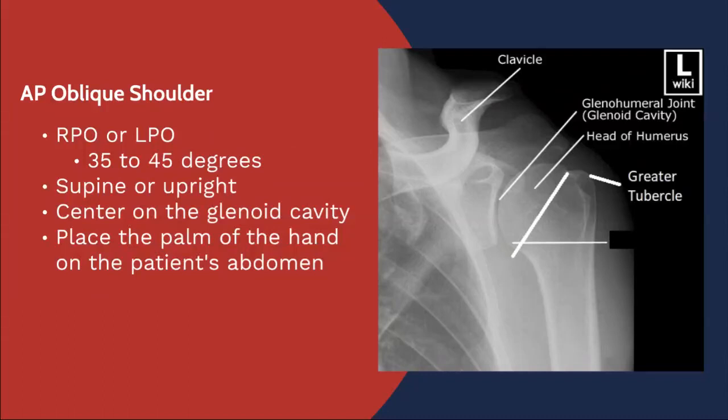As always, we want to be centered on the anatomy of interest, which in this case is the glenoid cavity of the scapula. It is fairly palpable — at least the greater tubercle is fairly palpable — and if we move about an inch medial from the greater tubercle, we should be able to locate that joint space. Finally, we want to place the palm of the patient's hand on their abdomen. This allows for proper rotation of the humerus so that we're able to see the greater tubercle more or less in profile.